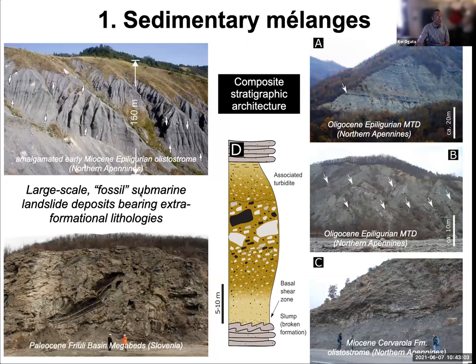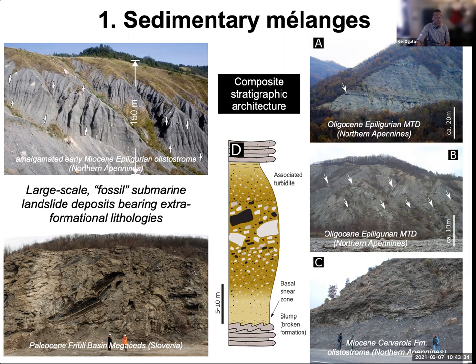Starting from sedimentary melange: as we said, these are basically large-scale fossil submarine landslide deposits bearing extra-formational lithologies, and are conformably contained and embedded within basin deposits. Those units can therefore be studied implementing a stratigraphic approach, and nonetheless, they have large lateral variability. There is a common composite stratigraphic architecture that is repetitive and systematic, as seen in several examples. Their composition is highly heterogeneous, and largely depends on the physiography of the depositional setting — for example, the wedge top versus the foredeep.